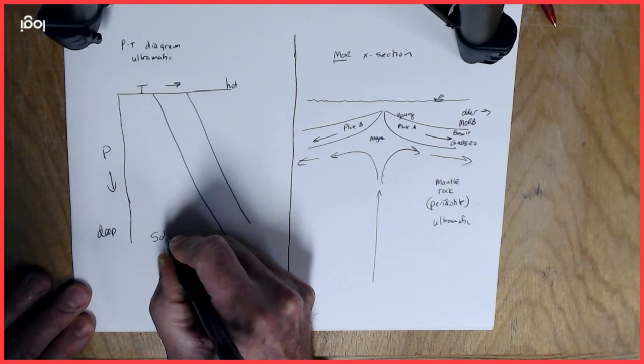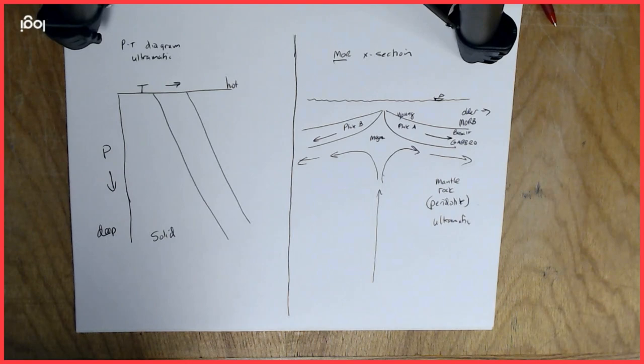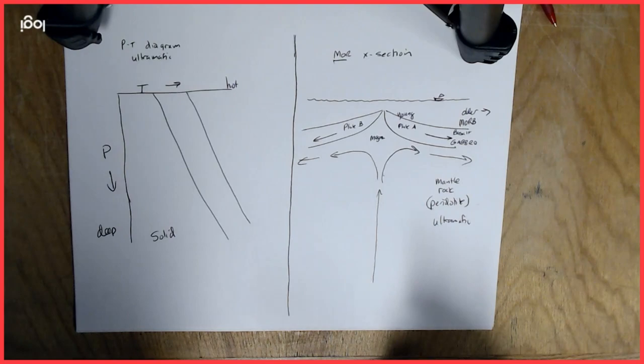The solid phase is favored by higher pressures and lower temperatures, so that's going to be towards the left and down on our graph. So deeper in the mantle tends to be solid.